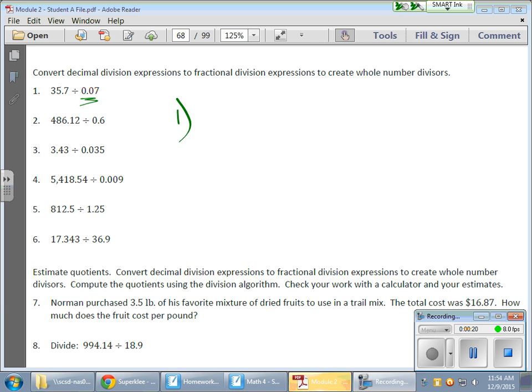So let's begin. The first thing I'm going to do is show this particular problem as a fraction, so 35.7 over 0.07. This is a division symbol, and this is a division bar or a fraction bar. This is the guy that I have a problem with right now. This guy right now is a decimal.